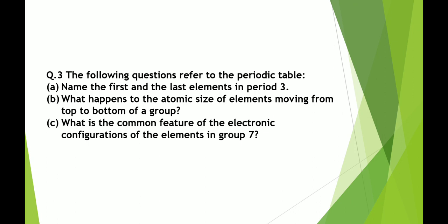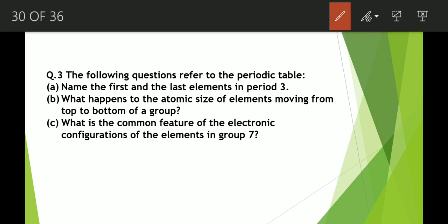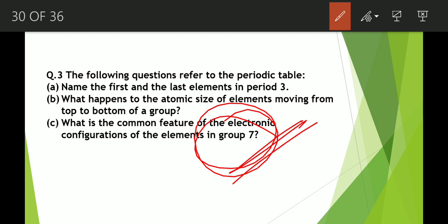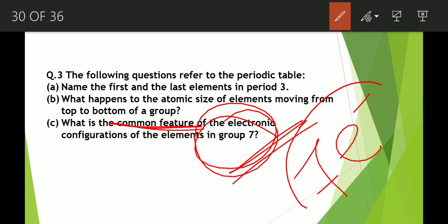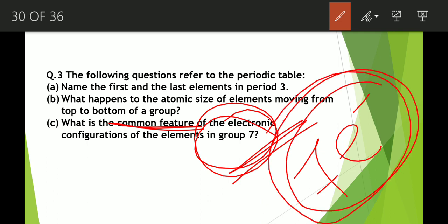The common feature in the electronic configuration of all elements present in group 7 is that they all have 7 electrons in their valence shell.